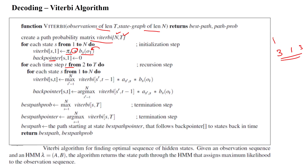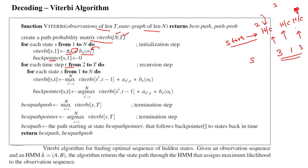For this observation pattern we have to identify the state sequence — each day may be hot or cold. Initially we are in the start state. We move from time step 2 to T, where T equals 3 (the length of the observations). So for each state we have to move through the first, second, and third time steps.